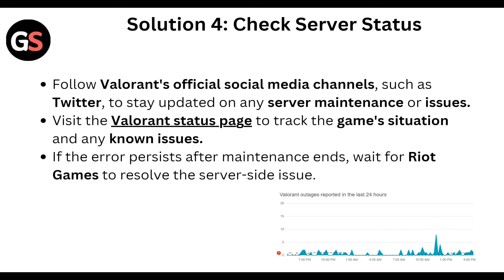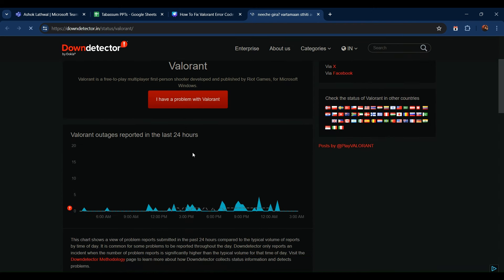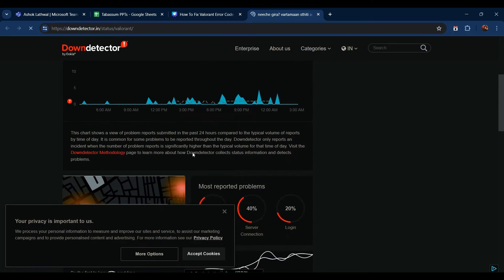Then check the server status. Follow the Valorant official social media channels such as Twitter to stay updated on any server maintenance or issues. You can also visit the current status page to track the game status. Go to the Valorant game website or status page like status.riotgames.com and check for any updates there.